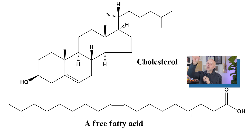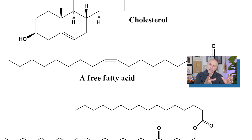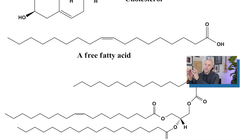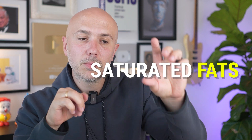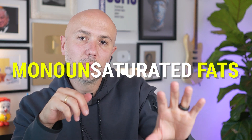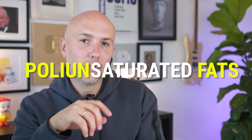Omega-3 is a fat — a lipid — that comes from the big family called lipids. Within lipids, you have fatty acids and esters. Setting esters aside, fatty acids include saturated fats, monounsaturated fats, and polyunsaturated fats. Within polyunsaturated fats is where we find omega-3s.